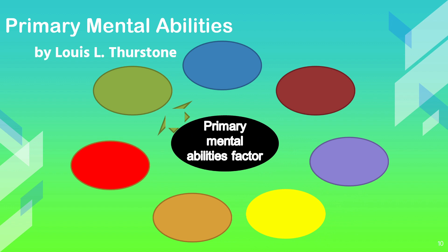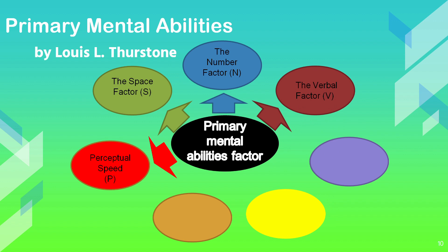What was important in Thurstone's early formation of his primary mental ability theory is that the abilities were described as independent, implying that you could be strong in one ability and very weak in another. This theory leads us to the next two theories which support the same idea.